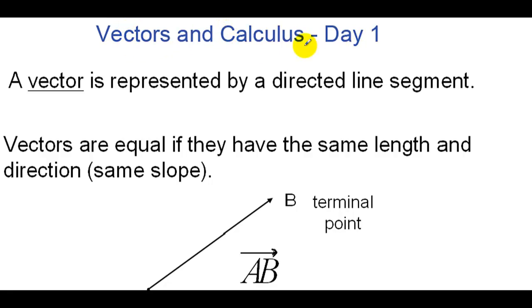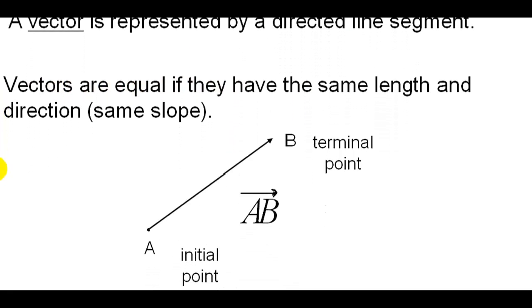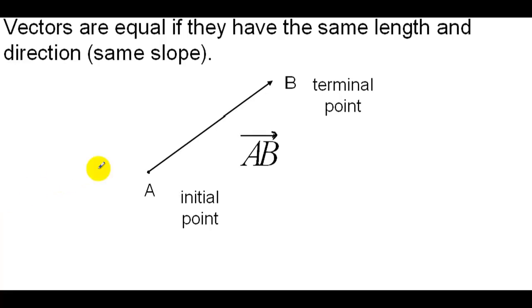Vectors and Calculus Day 1. A vector is represented by a directed line segment. Vectors are equal if they have the same length and direction, in other words the same slope.